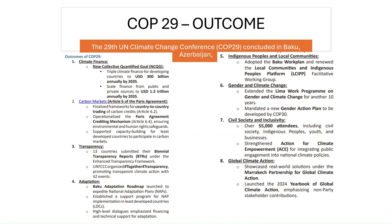Recently, COP29 of the UNFCCC was held in Baku, Azerbaijan. A key outcome was the New Collective Quantified Goal, which sets a target to triple climate finance from the previous USD 100 billion annually to USD 300 billion by 2035. Carbon markets were also finalized under Article 6 of the Paris Agreement, establishing a framework for country-to-country trading of carbon credits.